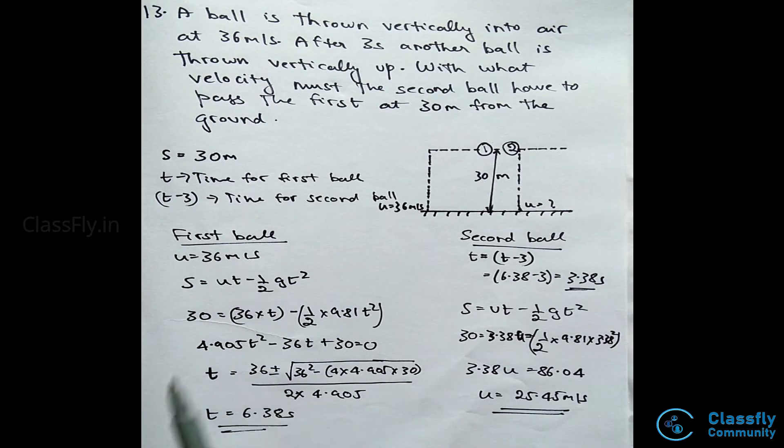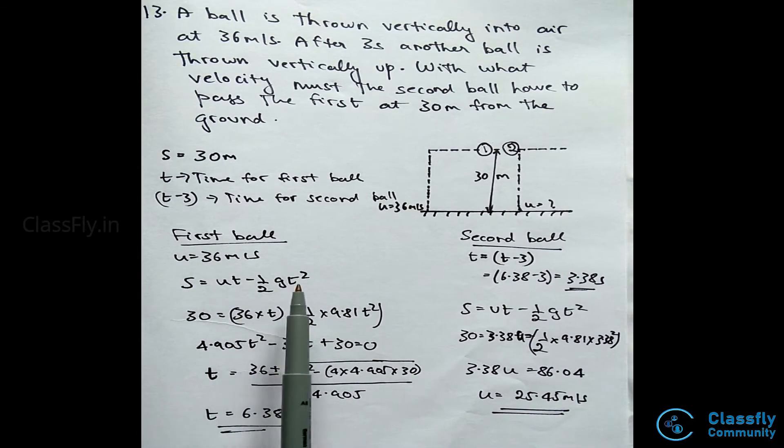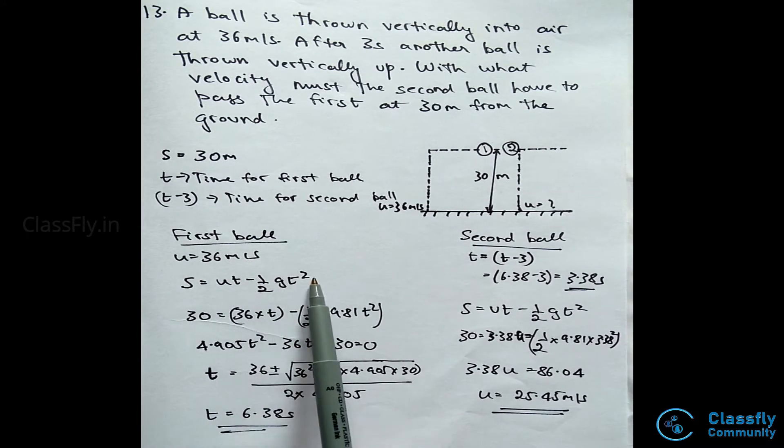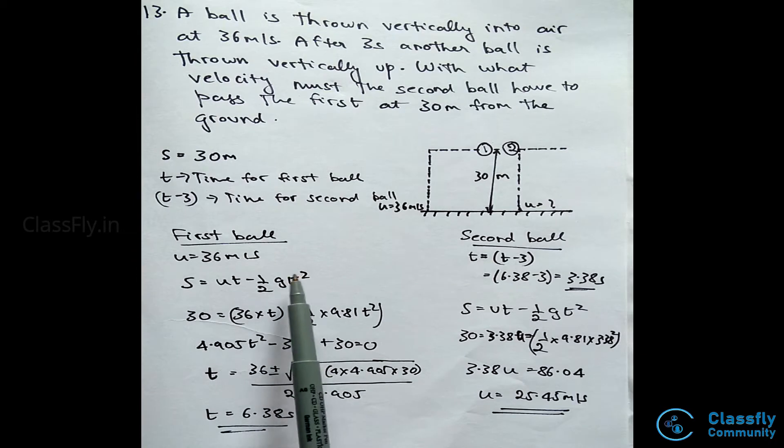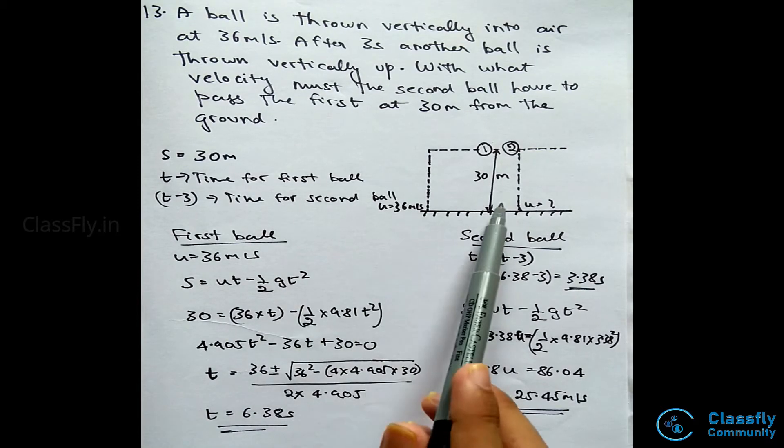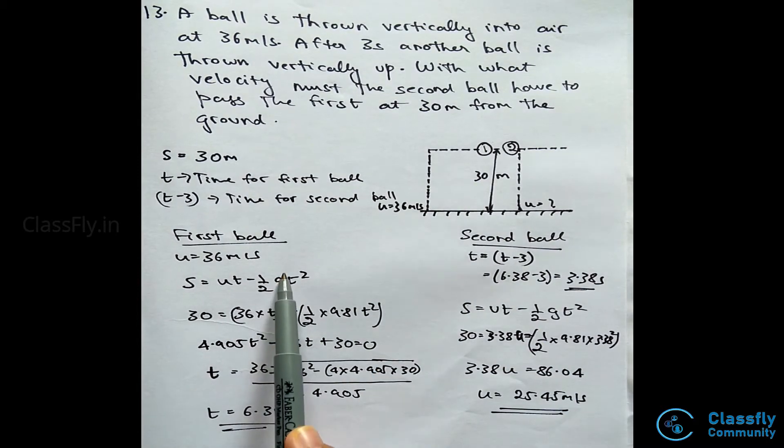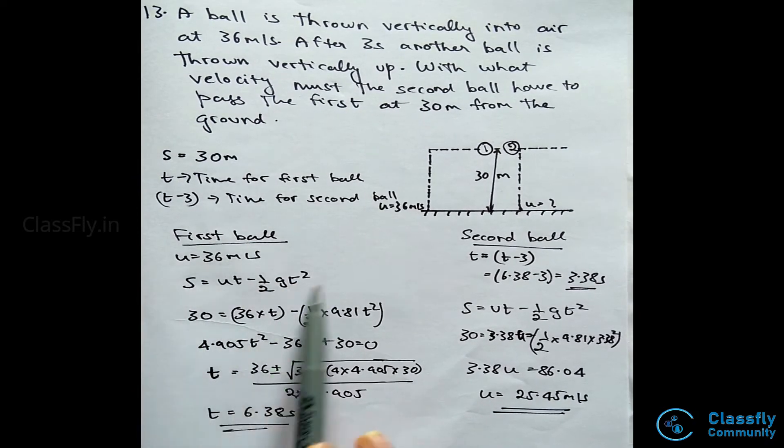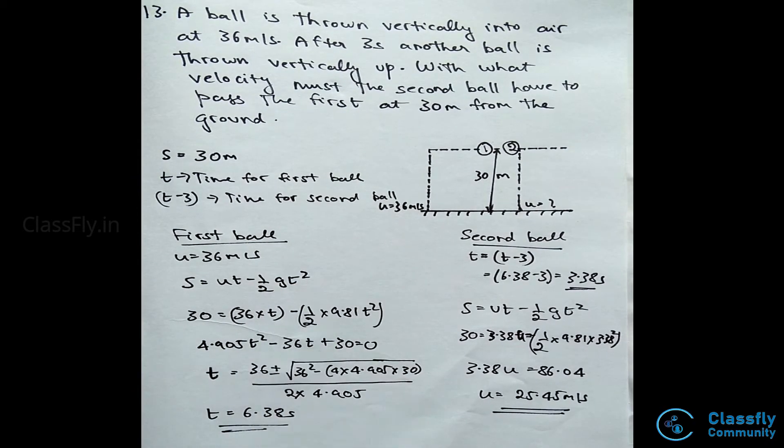Consider the first ball. The initial velocity u is 36 meters per second. Applying the equations of motion, we have s equals ut plus half a t square. Since the problem is related to gravity, acceleration is replaced by acceleration due to gravity, that is g. Since the ball is thrown up, this will be acting in the downward direction, that is the opposite direction. Hence, s can be given as ut minus half g t square.